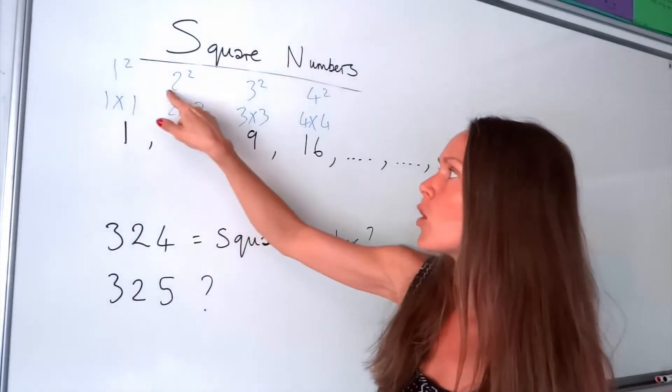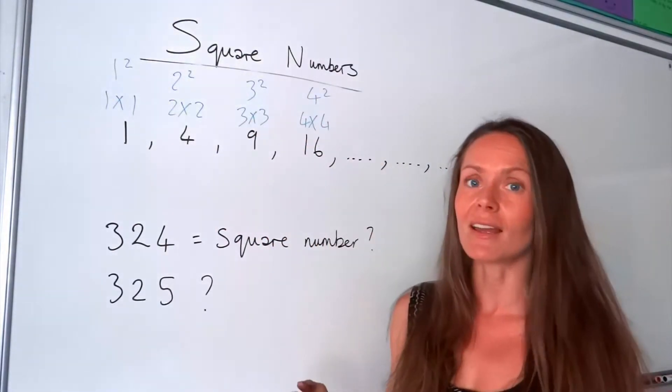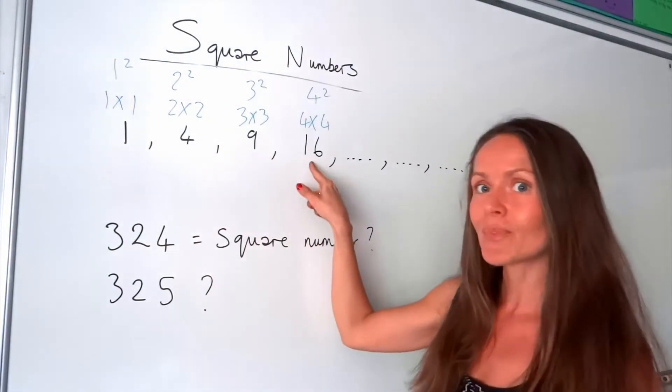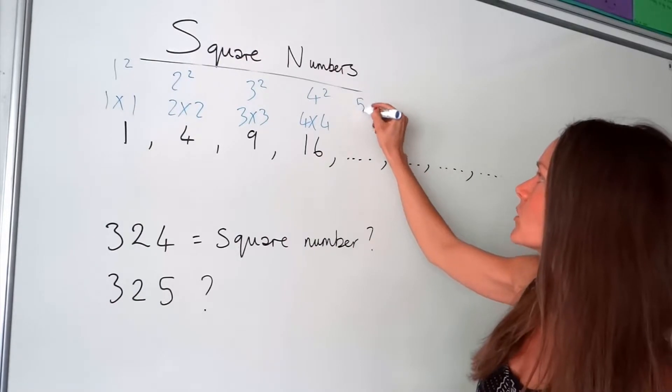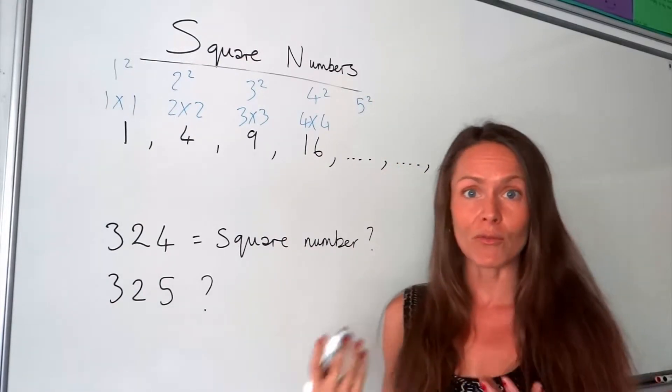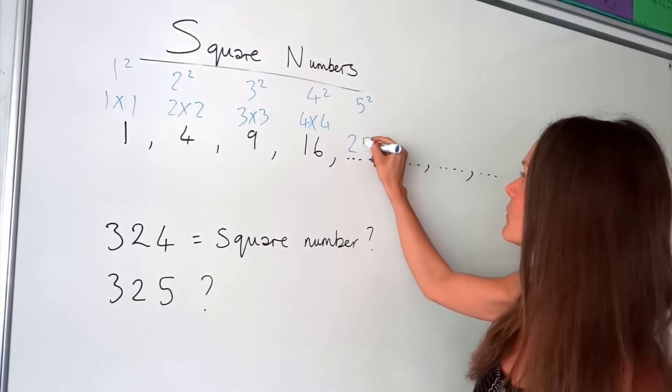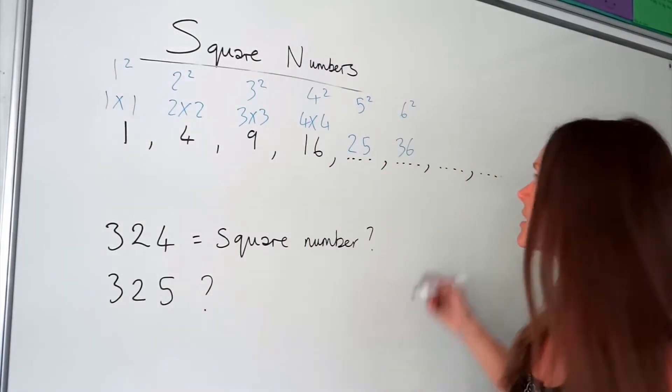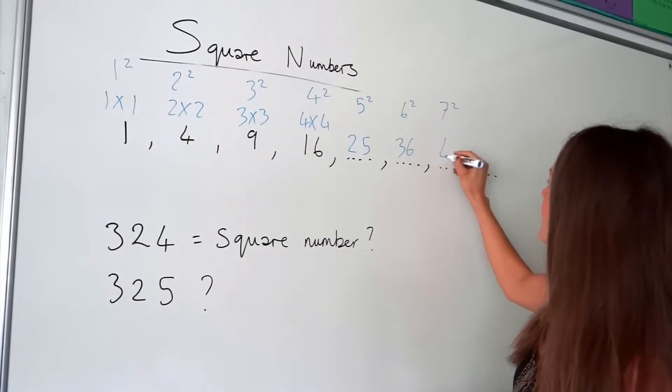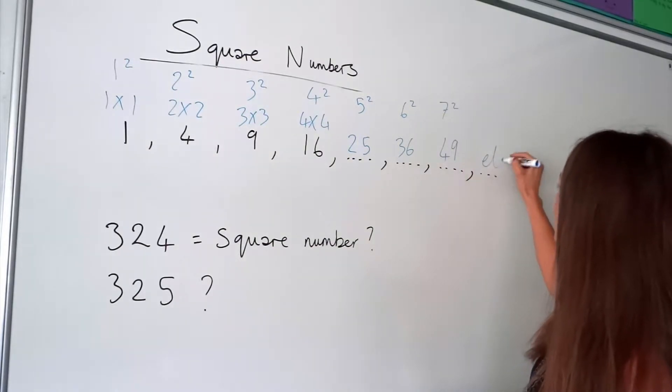So you're squaring these whole numbers to calculate the square numbers below. For the next one, we're just going to continue the pattern, and I'm going to work out 5 squared. Well, 5 squared is 5 times 5, which is 25. 6 squared is 6 times 6, which is 36. 7 squared is 49, and so on.